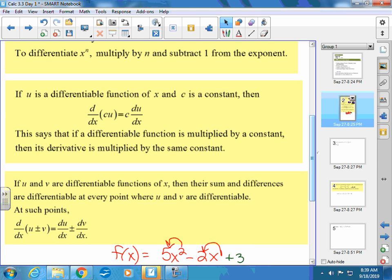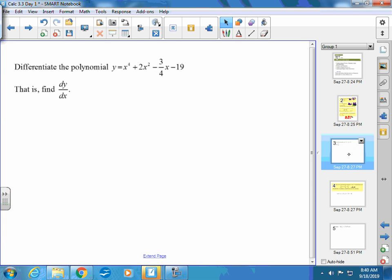So let's use those rules now. Kind of throw them together in different equations, just like this last one that I just did right here. Does everybody have the rules written down? I don't want to slide past. Are we good? So here we go. It says differentiate the polynomial, y equals x to the fourth plus 2x squared minus 3 fourths x minus 19. Differentiate means to find dy/dx, or to find y prime. Right? They all mean the same thing.